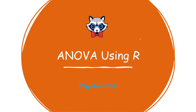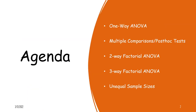Welcome back to the channel everybody. Today we're going to be talking about how to run ANOVA using R, and this is going to be a series just like the regression series was. Today we'll start with the one-way ANOVA and the multiple comparisons and post-hoc tests that we do following a significant ANOVA result. In future videos we'll cover the two-way and three-way factorial ANOVA, as well as how you might handle unequal sample sizes.